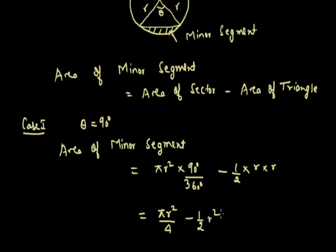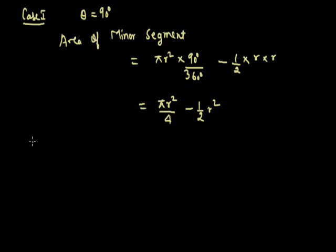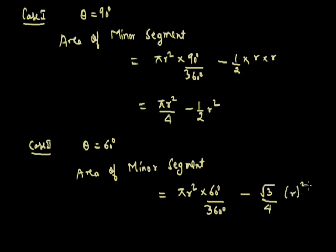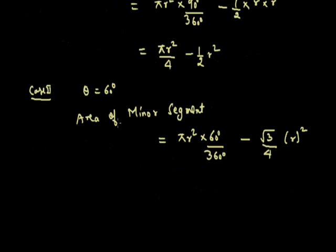Case 2: when theta equals 60 degrees, the triangle will be an equilateral triangle. Area of minor segment = πr²(60/360) minus (√3/4)r², which gives πr²/6 minus (√3/4)r².